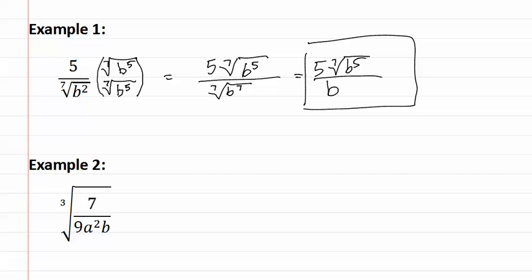Let's look at example two. In example two, once again we check to see if we can reduce anything. As you can see, we cannot. Therefore, we use the quotient rule to split these apart.